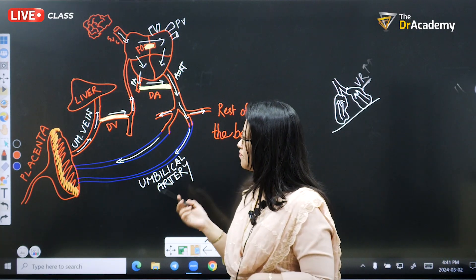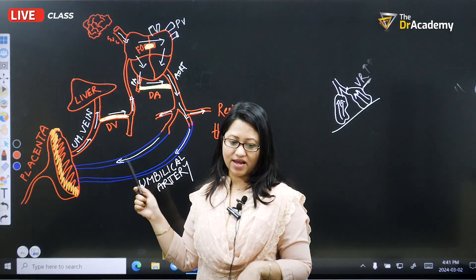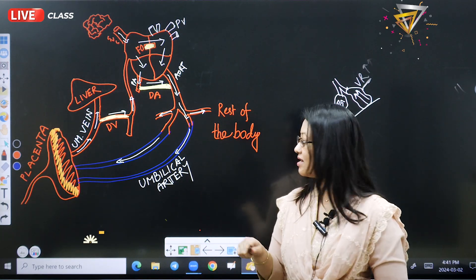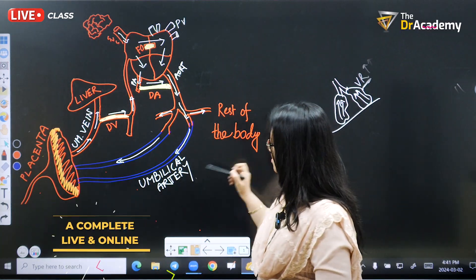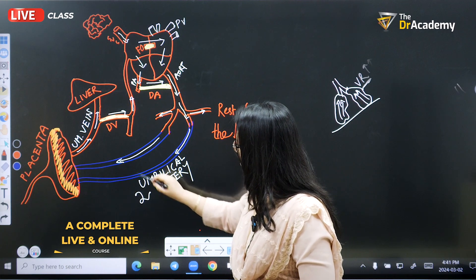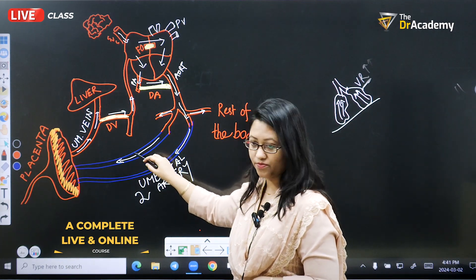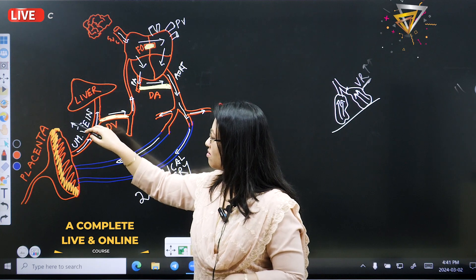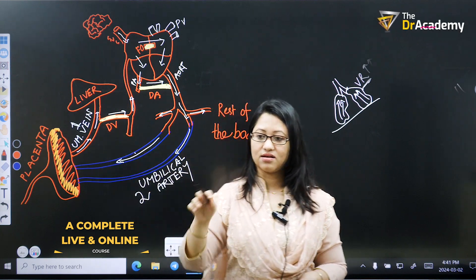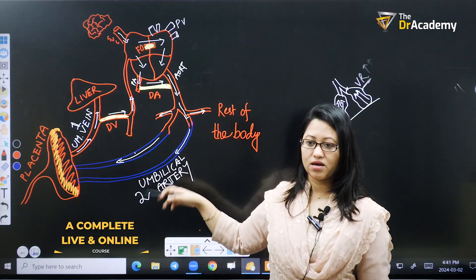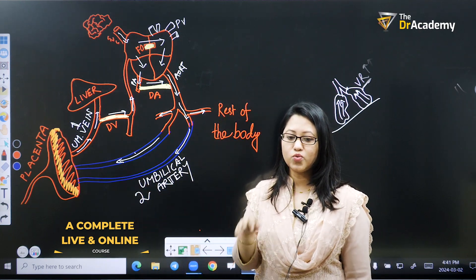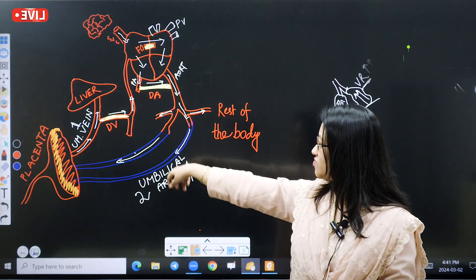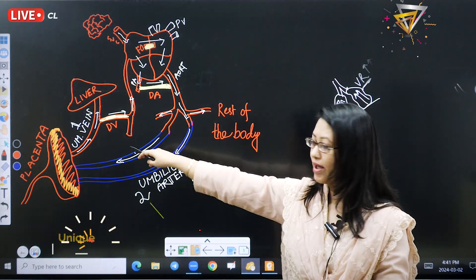There are two kinds of vessels: umbilical artery and umbilical vein. Always remember there are two umbilical arteries and one umbilical vein. Memorize this. In the exam, they will tell you which one of the following is not true and try to confuse you with this two-and-one distinction.